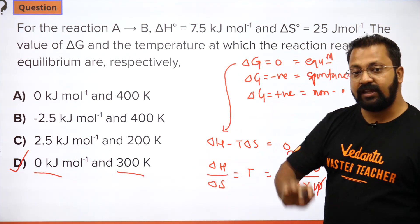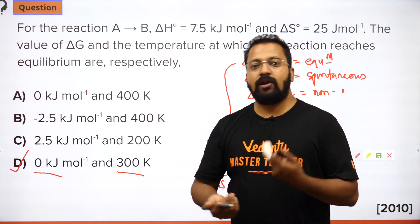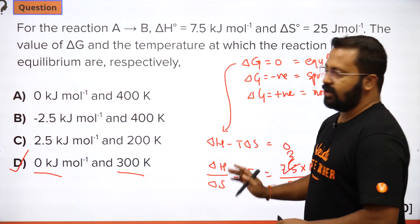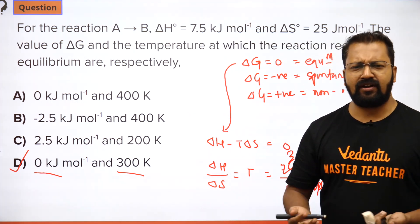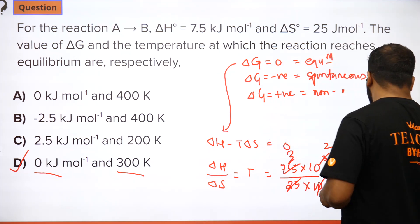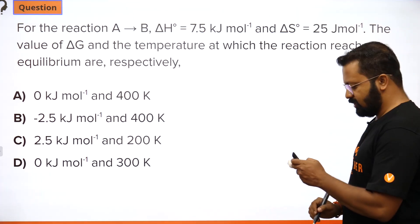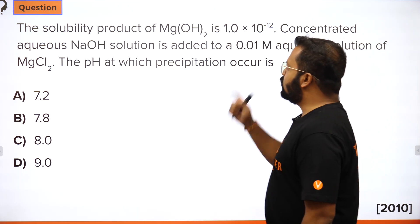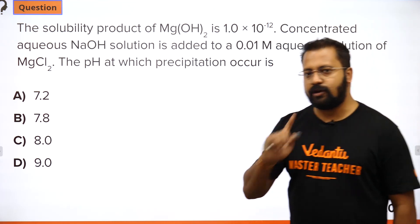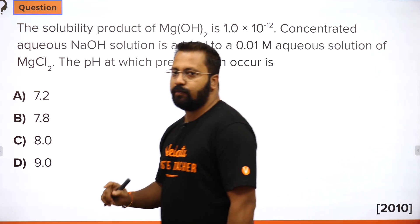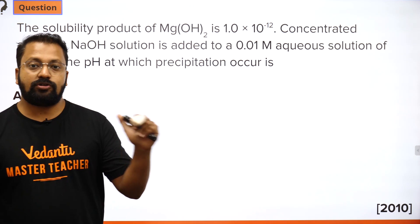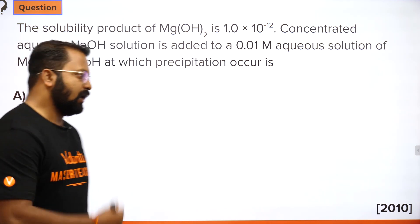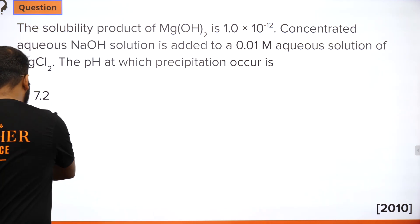Thermodynamics questions are easy if you know the formulas. Next question: the solubility product of magnesium hydroxide — this is a question from ionic equilibrium about solubility product. The solubility product is the product of the concentration of ions produced from the salt when it dissociates. If a salt AB gives off A⁺ and B⁻ ions, then Ksp = [A⁺][B⁻].